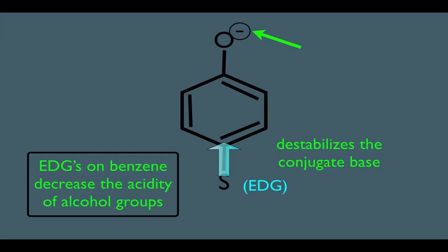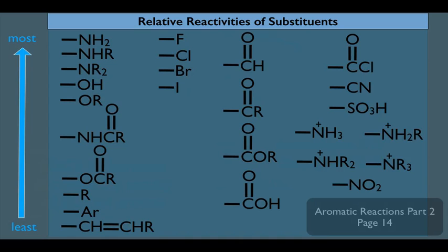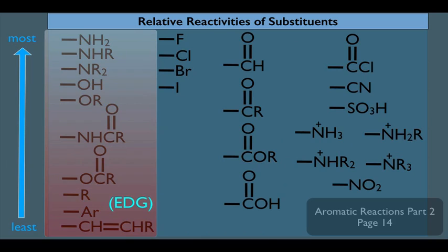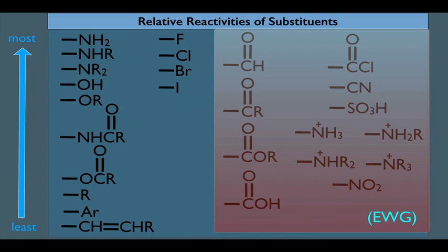Now think about what this means in the big picture. We saw in a previous online lecture a chart of our most often used substituents on benzene. There were three groups. The ortho-para directing activators are overall electron donating groups, so these groups would make alcohols on a benzene ring less acidic. The ortho-para deactivators are overall electron withdrawing, so they'll make an OH on a benzene ring more acidic. And that's also true for the third group, the meta-directing deactivators — they're overall electron withdrawing.